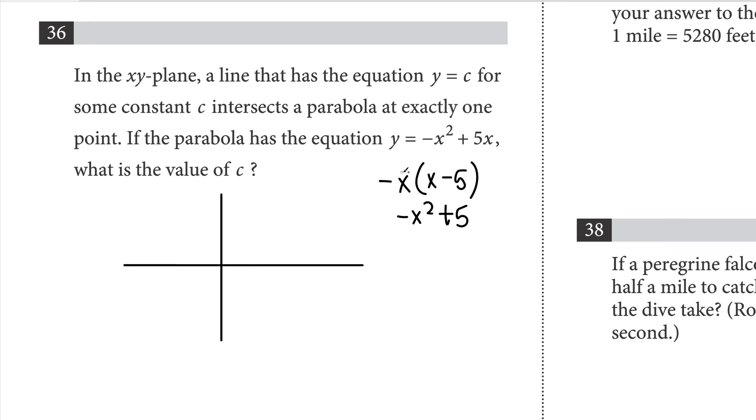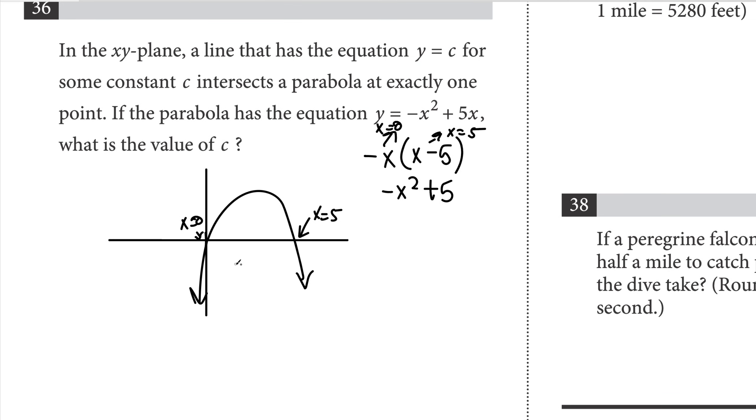If you distribute it, that would be negative x squared plus 5x. So I just factored out this x. Now this means we have a downward facing parabola and we already have the roots. This is going to be x equals 0 and x equals 5. So the parabola would look like this. We have x equals 0 over here and x equals 5 over here. So let's figure out where this line is going to be. We have the line y equals c and we want c, or the line, to intersect at exactly one point.